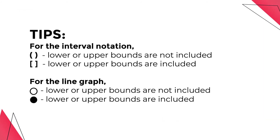Take note of the following. For the interval notation, use parentheses to indicate that the lower or upper bounds are not included in the graph, and use brackets to indicate that the lower or upper bounds are included in the graph. For the line graph, the hollow circle means that the lower or upper bounds are not included, whereas the solid circle means that the lower or upper bounds are included or part of the graph.